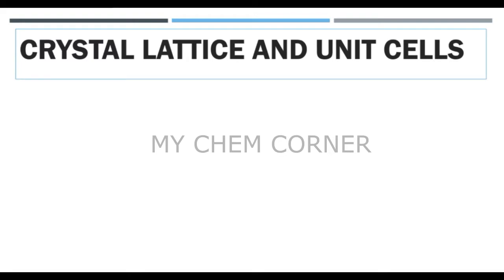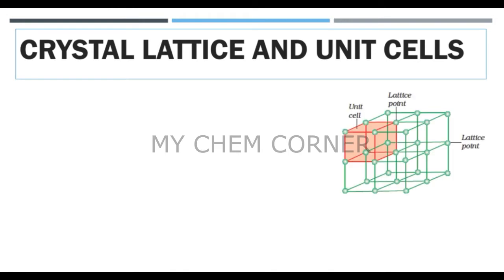The very first thing we will look into is crystal lattice and unit cells — basically the basic definitions of lattice points, crystal lattice, and unit cell. Before we move into the definitions, we need to know what these terminologies mean when you look at a diagram. Say I have a crystal here with cubes connected to each other — four cubes on top interconnected and four cubes below, both connected to each other. Each point in this cube, the atom or sphere, is a lattice point, and each cube is called a unit cell.